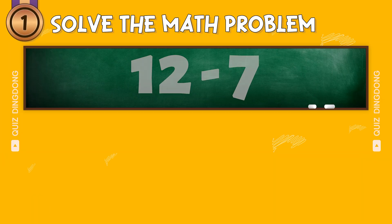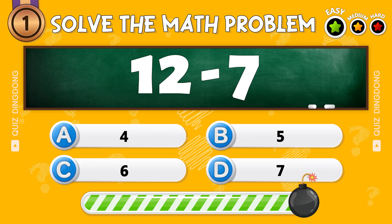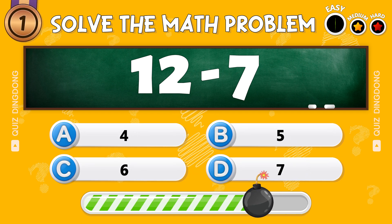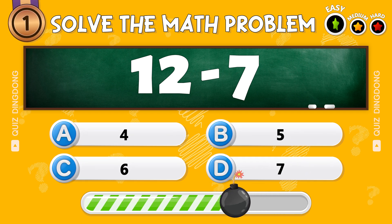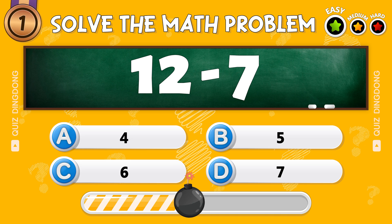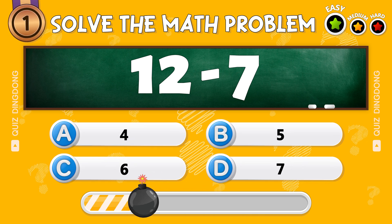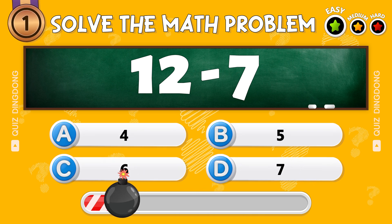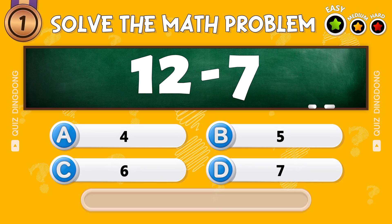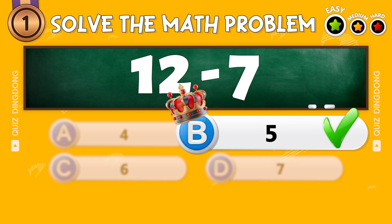First question. What's 12 minus 7? Correct! The answer is 5.